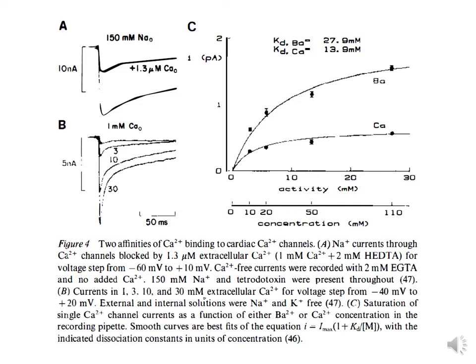So, what can we conclude from these figures? First, calcium channels in the absence of calcium allow the permeation of other ionic species such as sodium. At micromolar concentrations, calcium partially blocks the calcium channels. Second, at millimolar concentrations, the calcium channel selectively permeates only calcium.